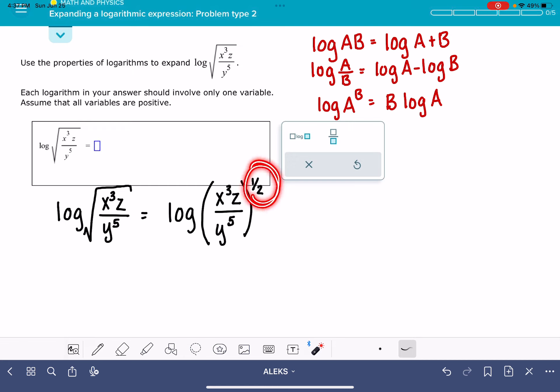The next thing that I'm going to do is take this one half term, and I'm going to apply it to every single term inside the parentheses. If we have a couple of numbers, like A times B to the X, that is equal to A to the X times B to the X. We can just take that exponent and apply it to every term inside the parentheses. So this is going to give us the log of X to the three halves, because I'm taking the three and multiplying it by one half, Z to the one half over Y to the five halves, because I'm taking the five and multiplying five times one half, that gives me five over two.